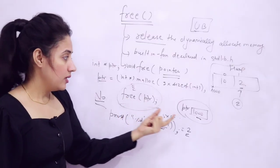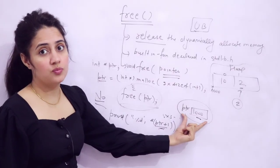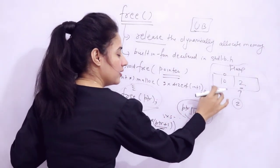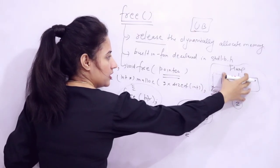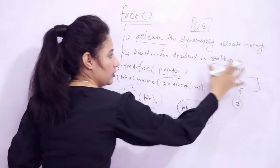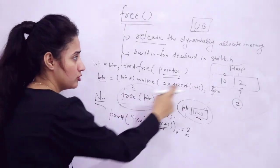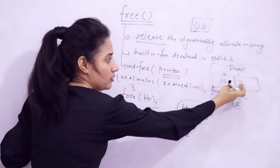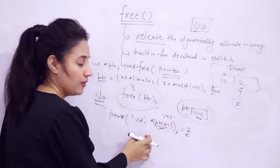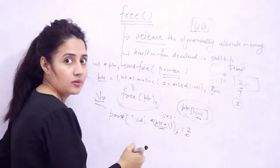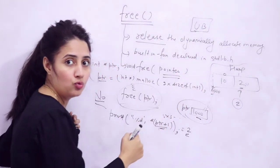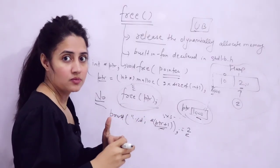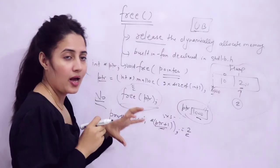After calling free, the pointer still contains 1000, but the object it points to has been released. The data is still physically there — free is not responsible for erasing the data — but the memory is back to the heap section and can be reused. If you use malloc again and overwrite that location with, say, 20, and you still access the pointer thinking it holds 2, you'll get 20 or wrong output instead. You can access it at your own risk, but it's undefined behavior.